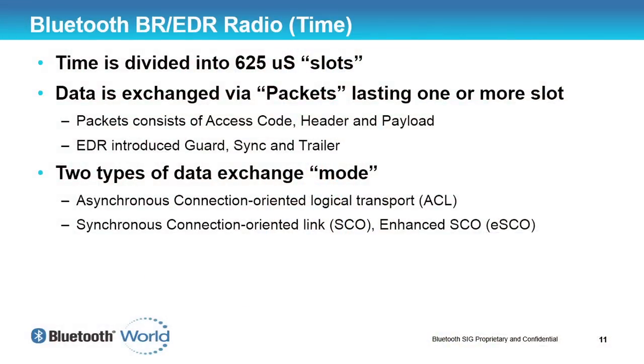There are two basic types of packet exchange. There's ACL — the Asynchronous Connection-oriented Logical transport — and there's SCO or ESCO, which is a Synchronous Connection-oriented transport. The easiest way to think of this is: ACL is for data, and SCO and ESCO are for voice.